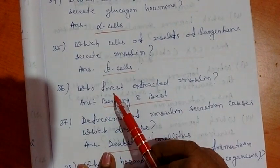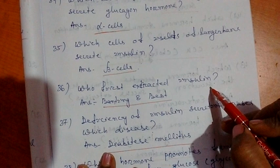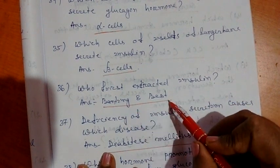Question 36. Who first extracted insulin? Banting and Best.